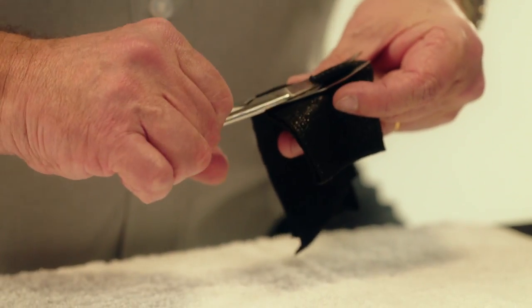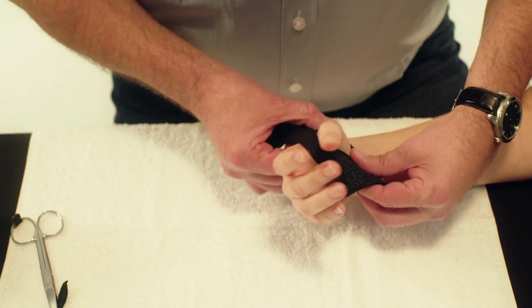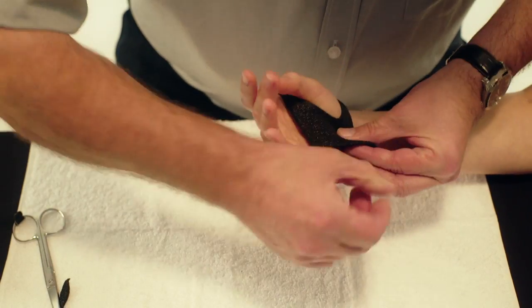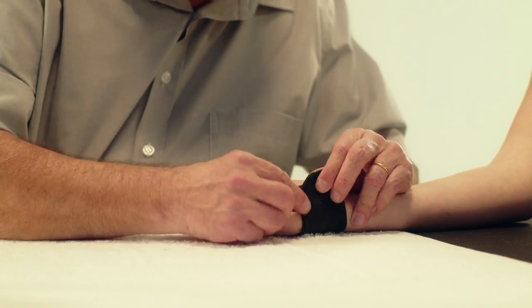Make a hole for the thumb at 2 thirds of the length and place the thumb through the hole. Pinch the OrphiCast together on the palmar side of the hand.